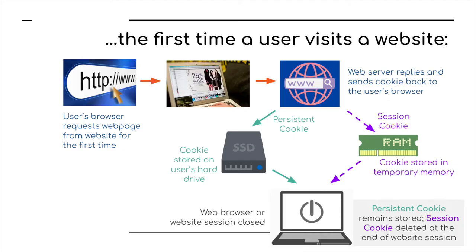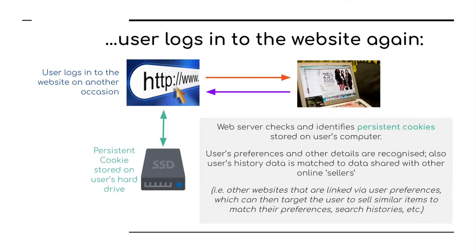When the web browser is closed or shut down, the persistent cookie remains stored, whereas the session cookie is deleted at the end of that particular session. The second time a user logs into the website and makes another request, the web server checks and identifies persistent cookies stored on the user's computer. The user's preferences and other details are recognized. Also, the user's historic data is matched to data shared with other online sellers — for example, other websites linked via the user's preferences and buying habits — and this is used to target the user with similar items or matched preferences.